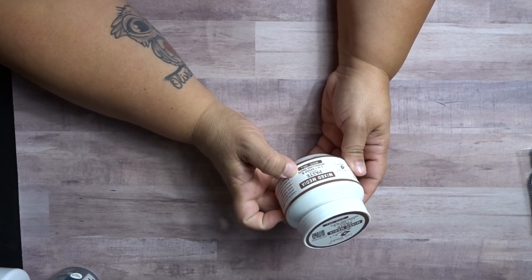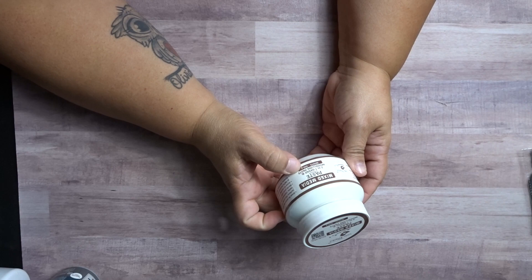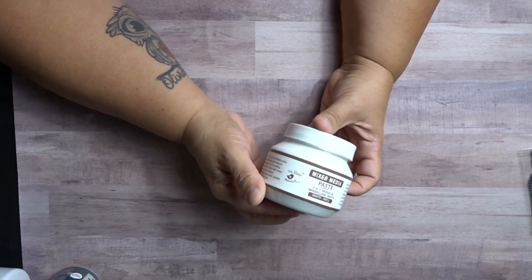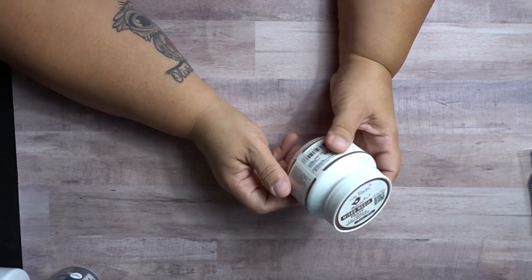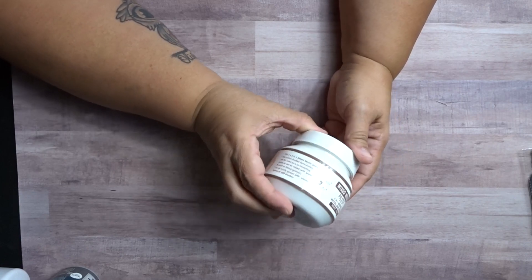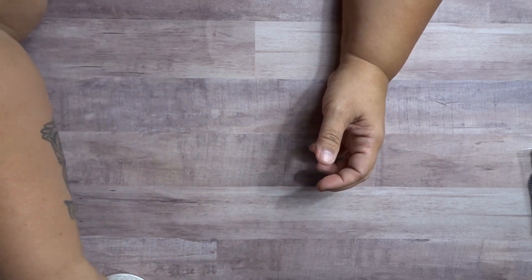Then you have your mixed media paste, two-in-one gesso, and modeling paste in white, 400 grams. So it's a nice size, nice weight and nice size. Can't beat the price.